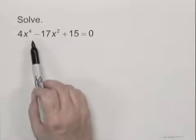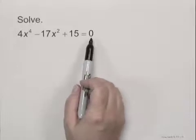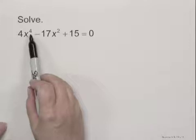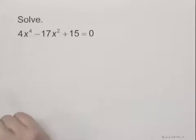Solve 4x to the 4th minus 17x squared plus 15 equals 0. Since we have an x squared and an x to the 4th, which is x squared squared, we can use substitution to solve this.